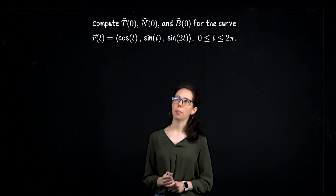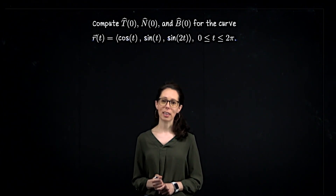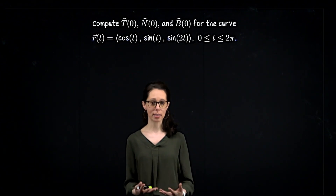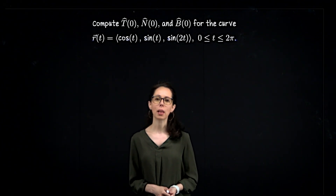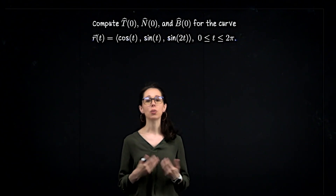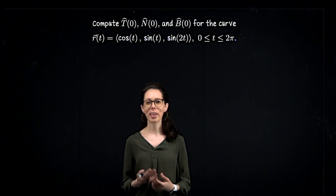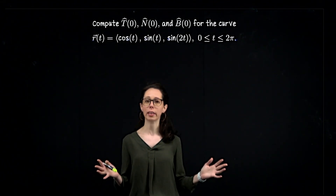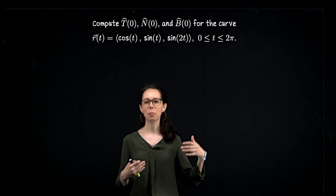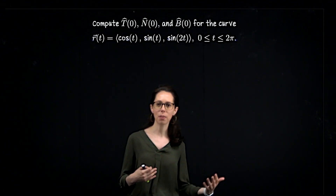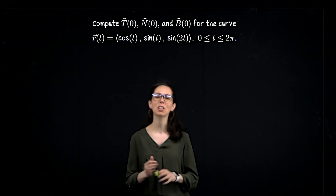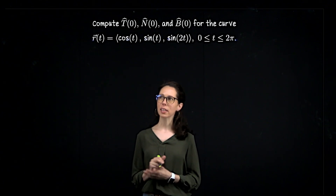As we work through this computation, focus on when we must keep the variable little t present and when it's safe to plug in t equals 0. A quick rule of thumb: anytime you've got to differentiate, you need to be working with the variable, so I can't plug in t equals 0 and get rid of little t too quickly. However, there are moments when it's a lot faster to just let t equal 0. So let's get started.